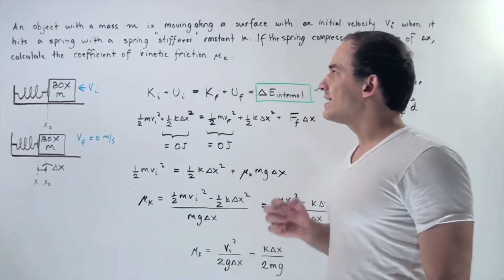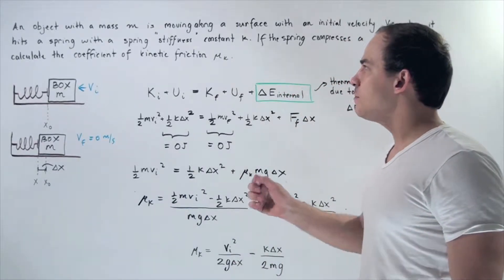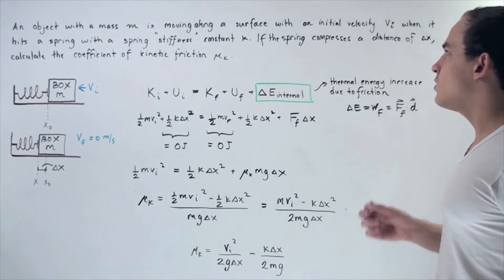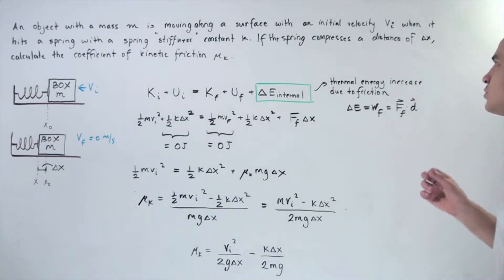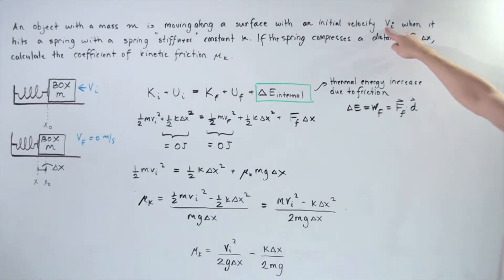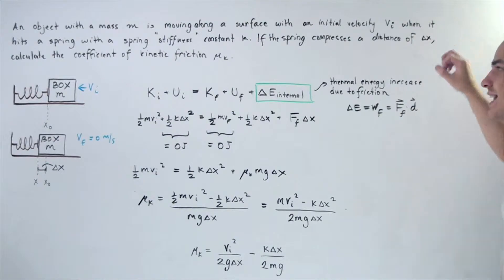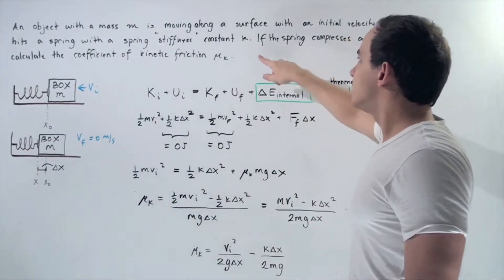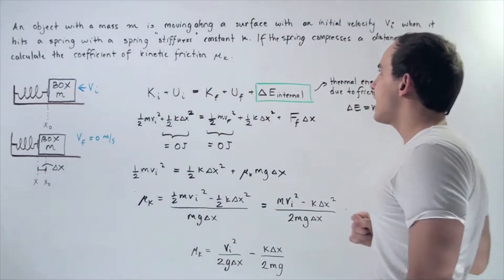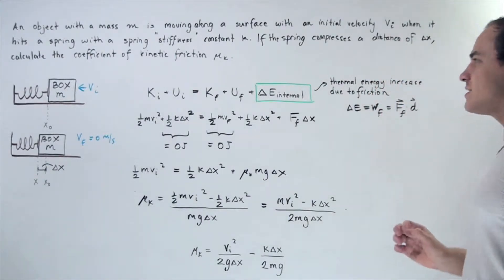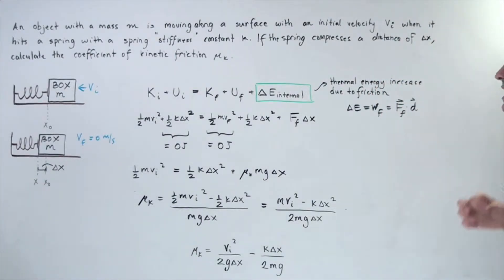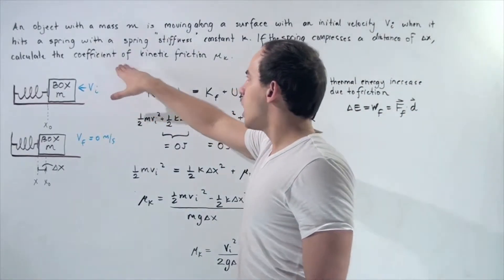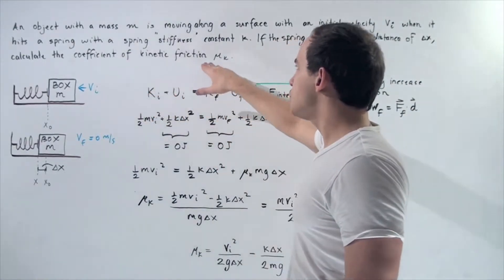Let's suppose that an object with mass — let's say a box — is moving along a horizontal surface with an initial velocity given by v_i, when it hits a spring with the spring constant given by the lower case k. If the spring compresses a distance of change in x, let's calculate the coefficient of kinetic friction, mu_k.